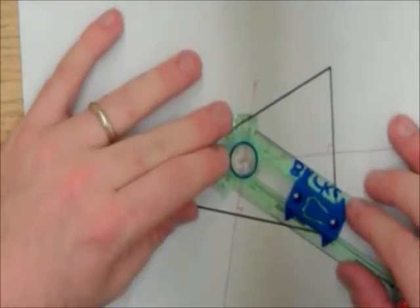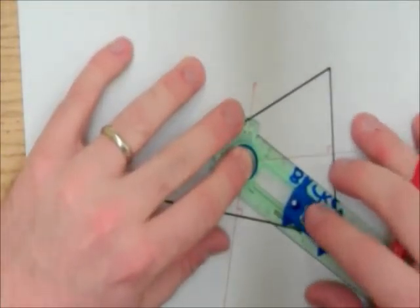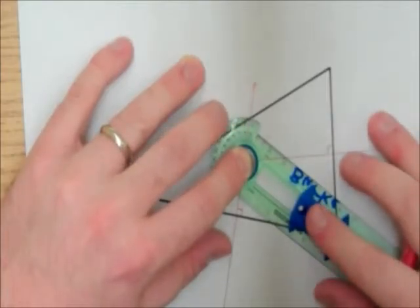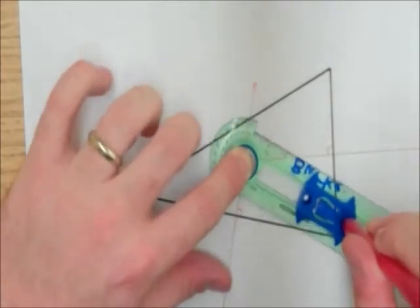I'm going to put the point of my compass right on my circumcenter. I'm going to open it up as far as one of the vertices, and then I'm going to try and draw a circle.